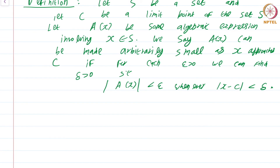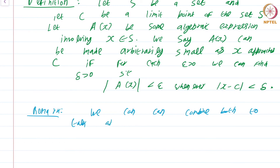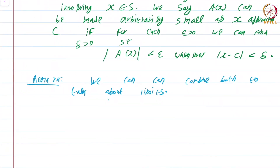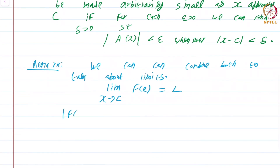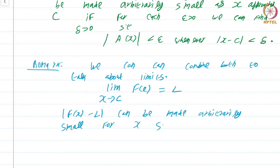Why are these first and second definitions useful? Well, as a remark, we can combine both of them to talk about limits. We can rephrase 'limit as x goes to c of f(x) equals L' as saying |f(x) − L| can be made arbitrarily small for x sufficiently close to c. This combines the meanings of both the preceding definitions.